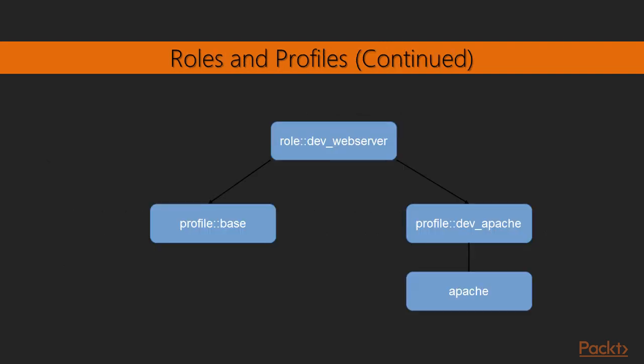A picture says more than a thousand words. For example, we have a role dev_web_server — the Puppet class role::dev_web_server we assign to a node. That role includes the base profile, which does some base configuration of the system such as adding required users, and the dev_apache profile which configures the Apache module. You can also create a second role web_server with production settings for Apache, calling a profile like profile::prod_apache, which includes the Apache module but with different settings.